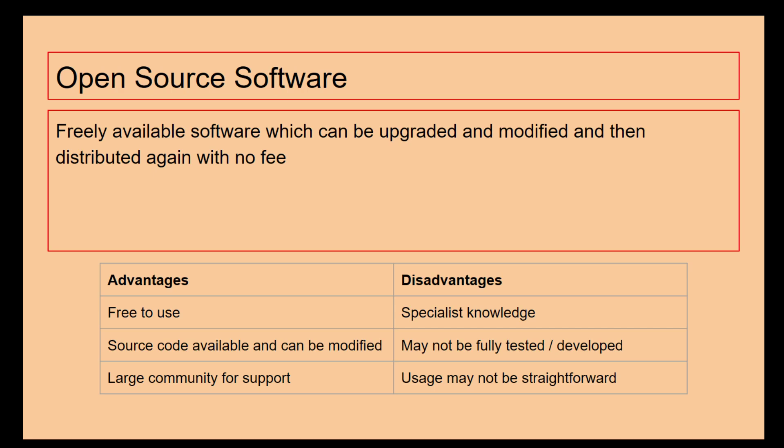The obvious advantages of open source are that it's free to use — there are no costs associated with it — and you can edit and modify it quite happily. The source code itself is made available and can be modified. There's also a large community for support, especially if you're looking at particular operating systems such as Linux, where there are massive communities ready and willing to help with any questions.